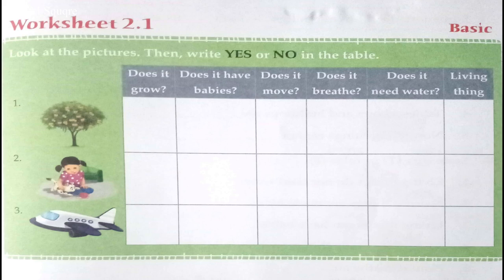First one — the first picture is a tree. A table is given. You have to write yes or no in the table: Does it grow? Does it have babies? Does it move? Does it breathe? Does it need water? So you have to confirm if it is a living thing or non-living thing. Ok, try to do that.